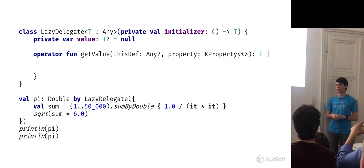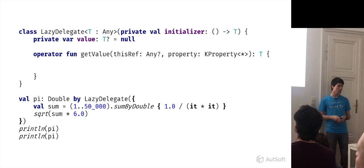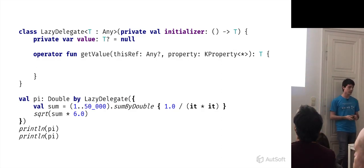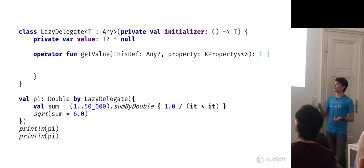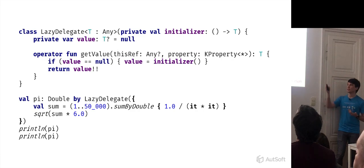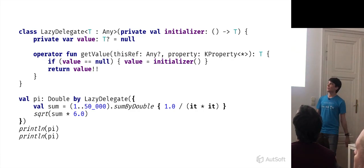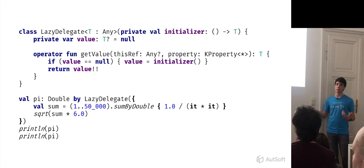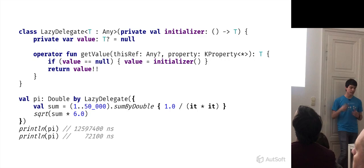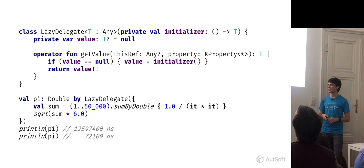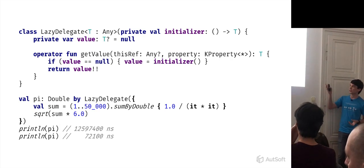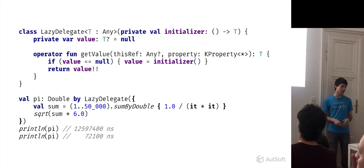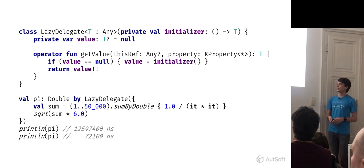Then we do the same thing as we saw with the custom getter example. What used to be a backing property is now just a property, since we are in a regular class. The code that was in the custom getter goes into the `getValue` method. We check if this property is null; if it's not initialized, we run the initializer code, and finally return the perhaps cached value. This is a very basic but already working implementation of the lazy delegate. Running it a couple of times, the first time it takes quite a bit of time as the computation approximates pi. The second time it's much faster, as we are essentially just performing a null check and reading a single field.